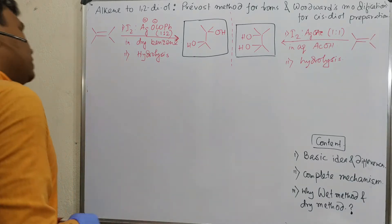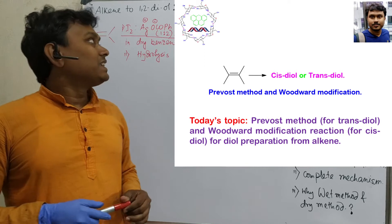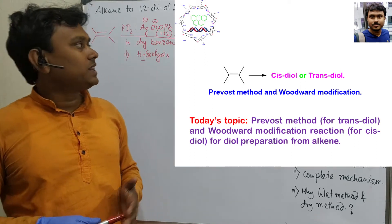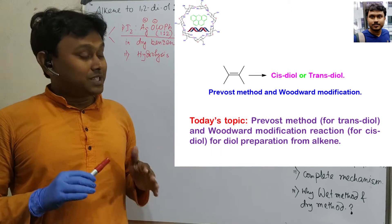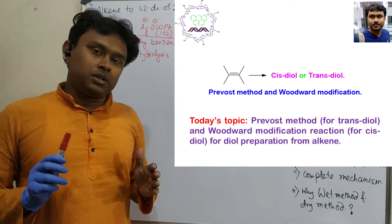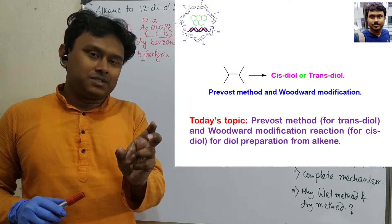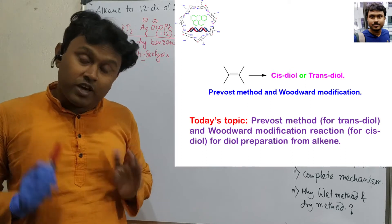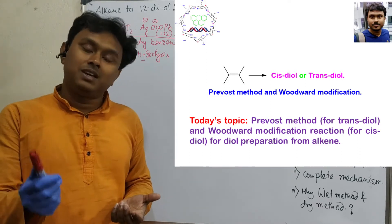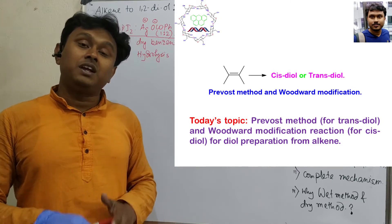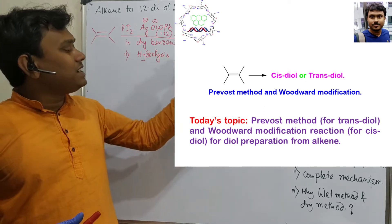Hello students, I am Tonboy and I welcome you all to my channel, Chemistry the Mystery of Molecules. Today we will discuss an interesting topic: the Prevost method and Woodward modification. These two reactions involve the conversion of an alkene into a diol, but with selective stereochemistry. This is important because in exams, due to slight differences, you can make mistakes.